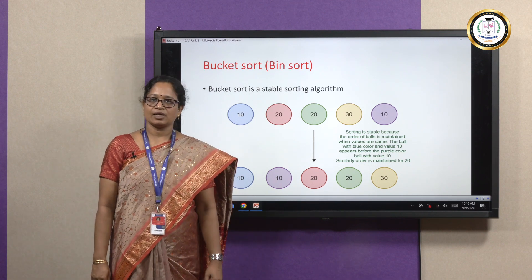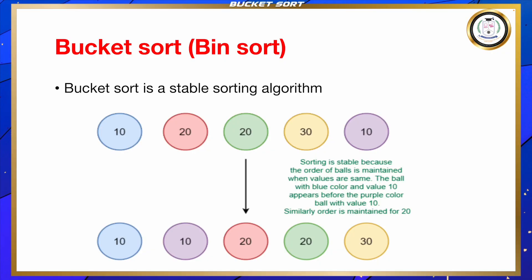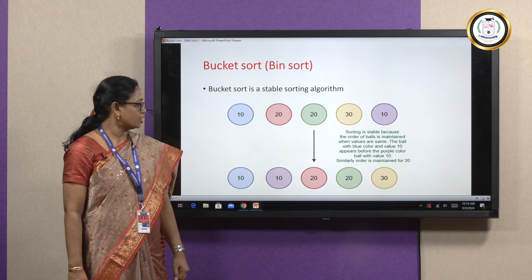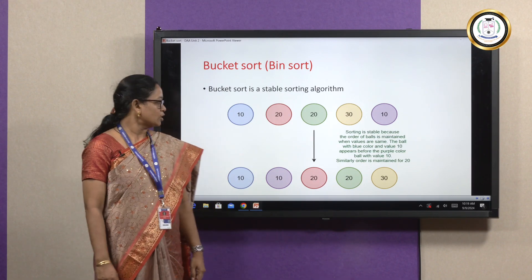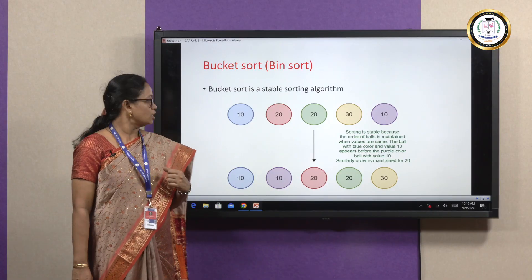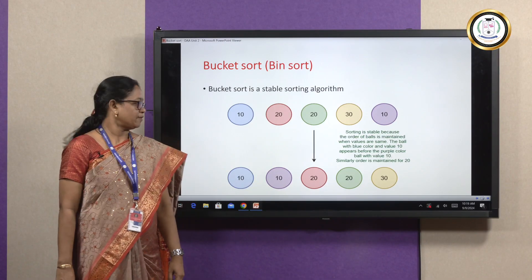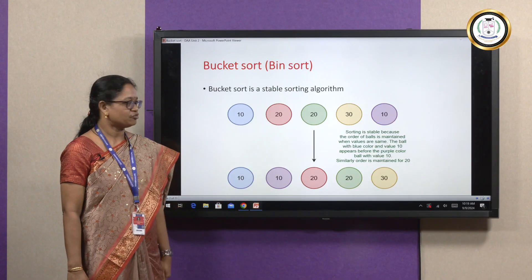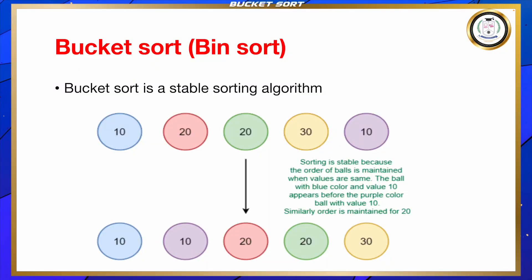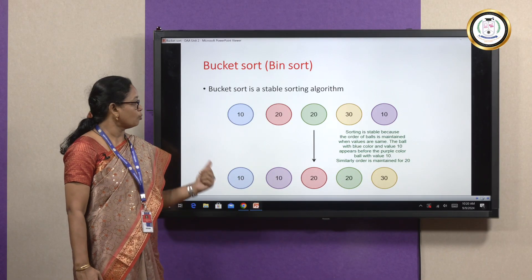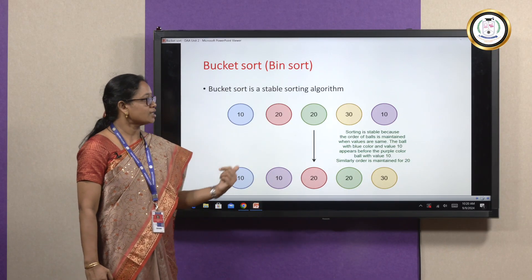Let us see a simple example. Here there are some balls with values like 10, 20, 20, 30, 10. After sorting, the values are 10, 10, 20, 20, 30. The blue ball with value 10 is placed first, and the purple ball with value 10 comes after that blue ball. So the order of the balls is maintained even after sorting — blue ball comes first and then comes the purple ball.